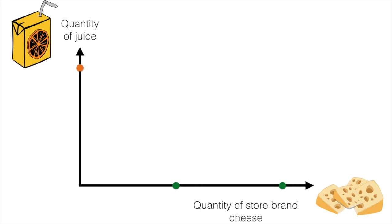Once again we're looking at two goods, however this time we consider store brand cheese instead of normal cheese with the assumption that store brand cheese is an inferior good. The other good remains the same, juice.